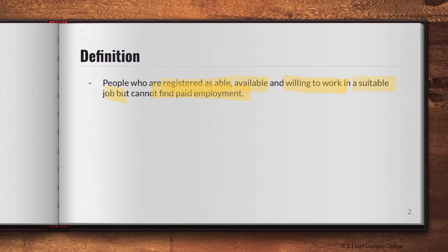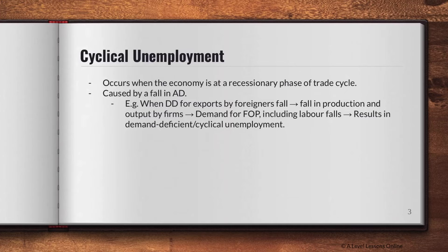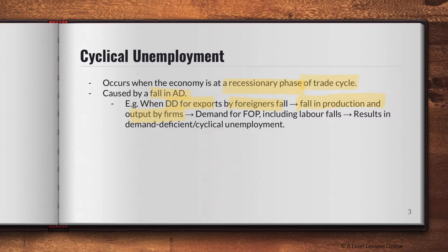The first type is called cyclical unemployment, also known as demand-deficient unemployment. This occurs when the economy is at a recessionary phase of the trade cycle, experiencing falling aggregate demand and falling growth, usually accompanied by a rise in unemployment. It is caused by a fall in AD — for instance, when demand for exports by foreigners falls, there is a fall in production and output by firms, hence the derived demand for labor falls.